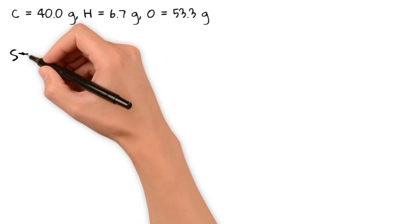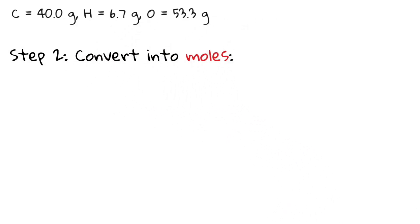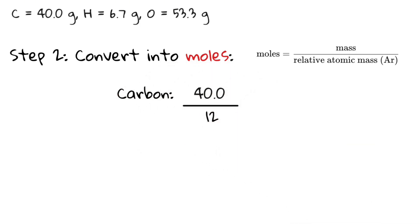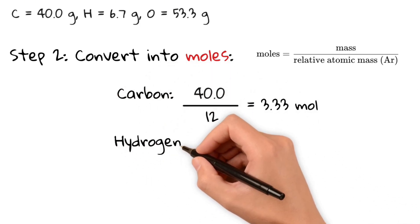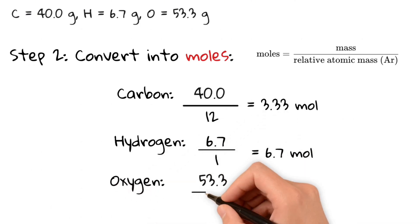The second step is to convert each mass into moles. We are using the formula mole equals mass divided by atomic mass. The atomic masses can be obtained from the periodic table. This gives us 3.33 mol for carbon, 6.7 mol for hydrogen and 3.33 mol for oxygen.